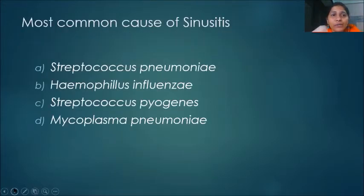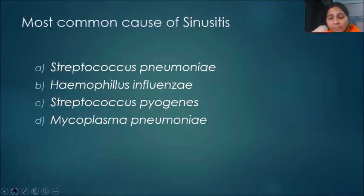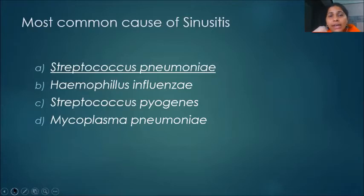Most common cause of sinusitis — options are Streptococcus pneumoniae, Haemophilus influenzae, Streptococcus pyogenes, or Mycoplasma pneumoniae. The answer is Streptococcus pneumoniae. Take any upper respiratory tract infection — whether it is otitis media, pharyngitis, or sinusitis — the most common cause is Streptococcus pneumoniae.